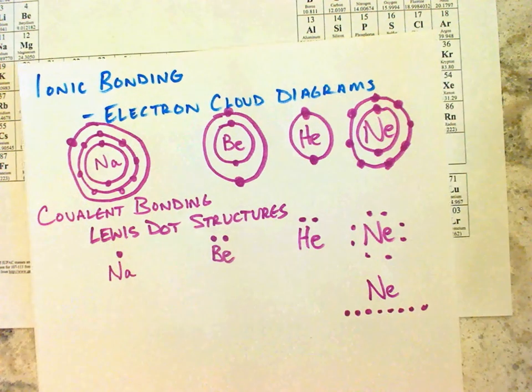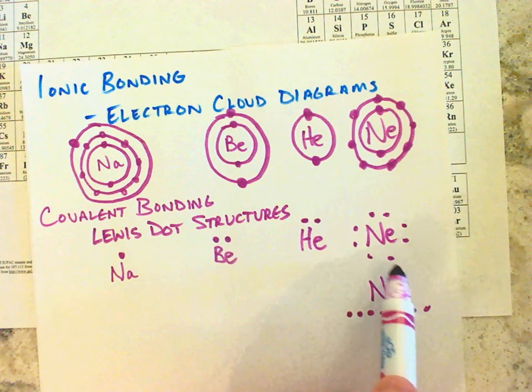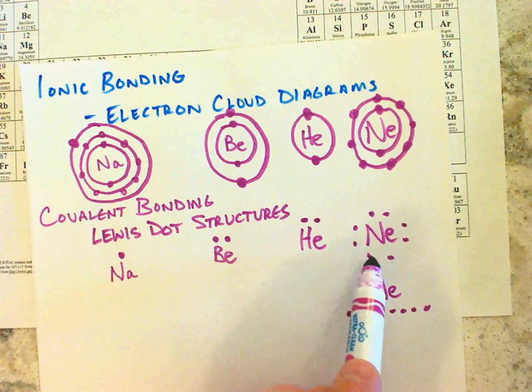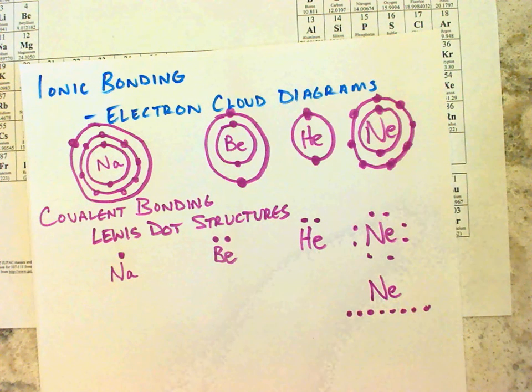If you remember those from last week, I'm going to show you a couple of these. If you remember the electron cloud diagrams, basically those showed the position of all of the electrons that an atom has. And the first step to that was looking at the periodic table, finding the element that we were talking about.